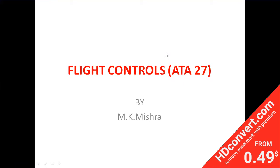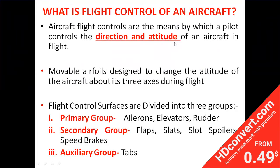This topic is Flight Controls, APA Chapter 27. Aircraft flight controls are the means by which a pilot controls the direction and attitude of an aircraft in flight. Flight control is a movable aerofoil designed to change the attitude of the aircraft about its three axes during flight.